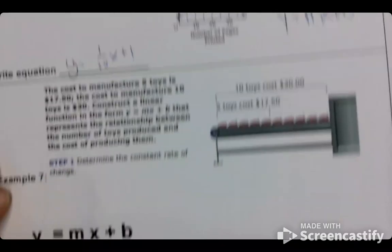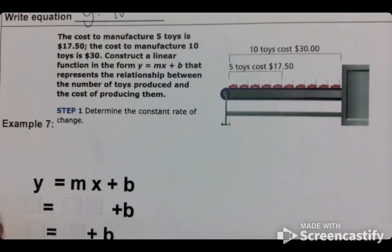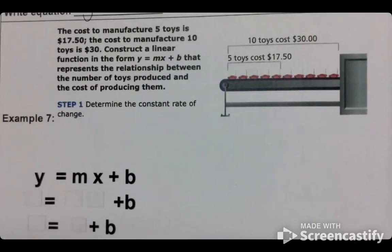All right. Last but not least, the cost to manufacture five toys is $17.50. The cost to manufacture 10 is $30. Write a linear equation. So I want you to try to do this, and then you can look at the answers and see if